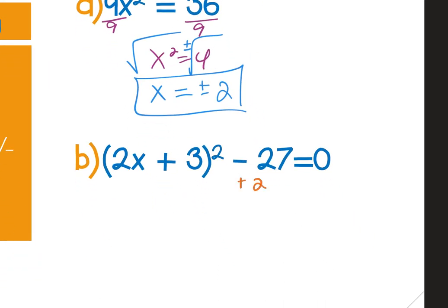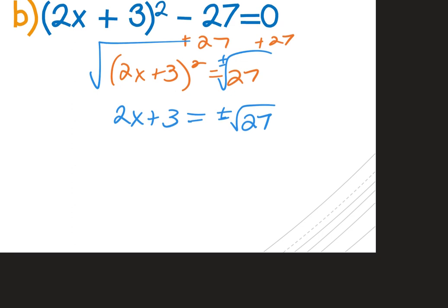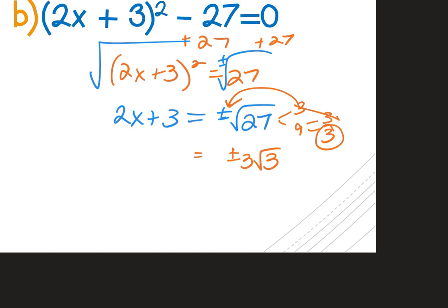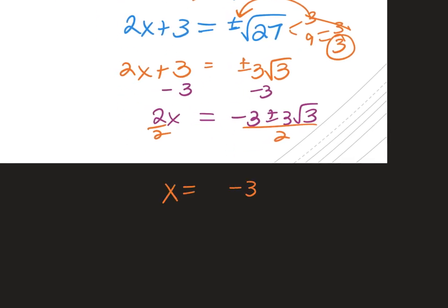For (b), first add 27 to both sides, then square root both sides putting ± in front of √27. Since 27 = 9 × 3, two threes come outside the square root and one three remains underneath, giving ±3√3. The equation is 2x + 3 = ±3√3, so subtract 3 — which can go at the front or back of the expression — giving −3 ± 3√3, then divide by 2.